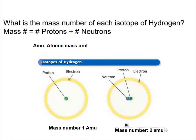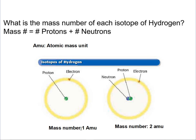Remember when we're calculating the mass number, you are not adding the number of electrons, because simply, an electron weighs zero AMU — it weighs very, very close to zero, so we don't count it.